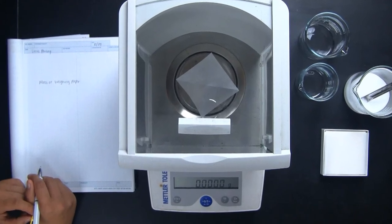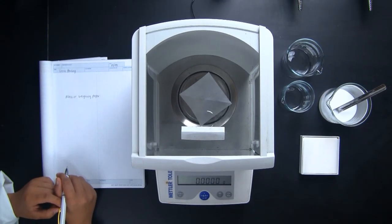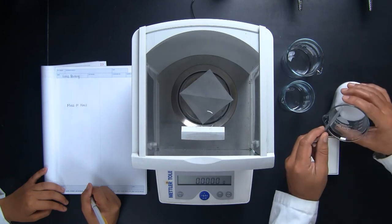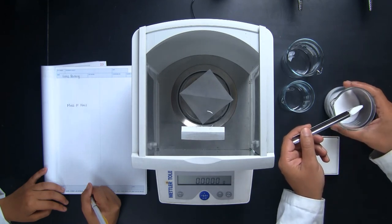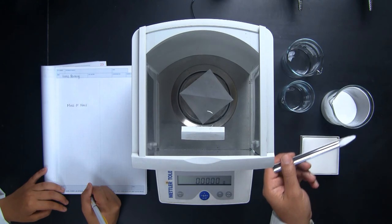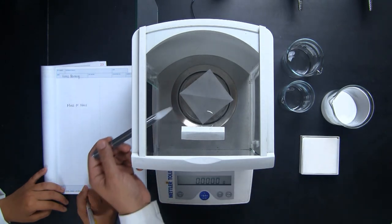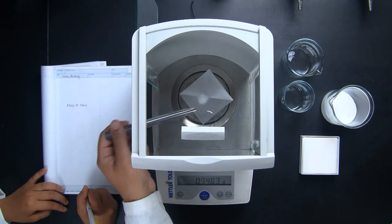Now, anything that is added to the weighing paper will be measured by the balance. After Ash figures out which hand he's going to use, he carefully transfers the reagent from the container onto the paper on the balance. Be extra careful not to spill reagent into the balance pan area.